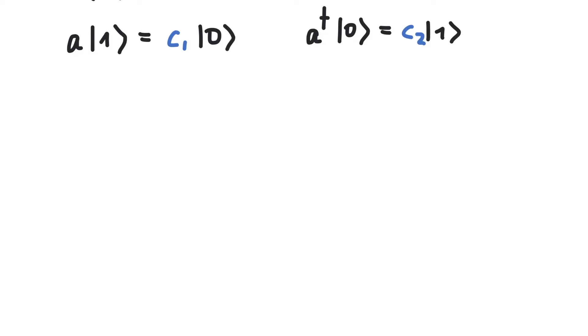First, c1. If we apply a on any state n, we say this is equal to c1 times the state n-1. To calculate this, we can take the norm on both sides of this equation.